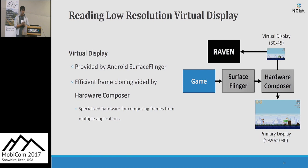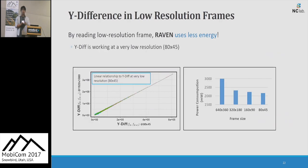The next key idea is reading a low-resolution virtual display. The virtual display provides frames with low overhead in real-time by using hardware composer, which is specialized hardware for composing frames in Android. Also, Laban can use low-resolution frames to save more energy, since Y-difference works at very low resolution. By reading low-resolution frames, Laban can read frames in real-time with low overhead.